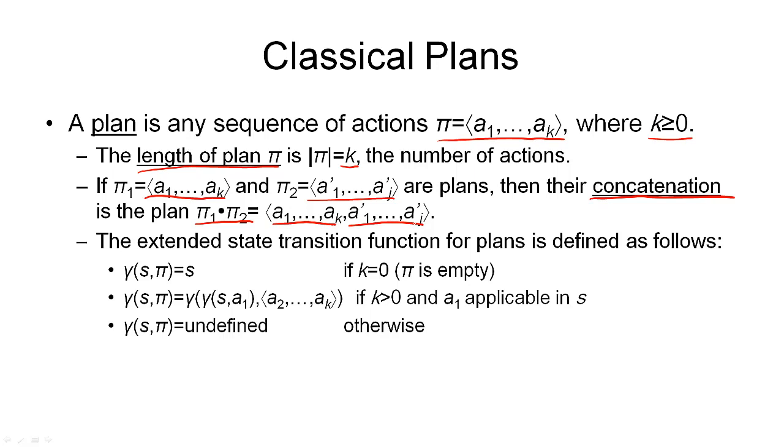We can also extend our state transition function as follows. We can define a state transition function for a state and a plan by defining that it is the state from which we start if our plan was empty. So if there were no actions in the plan, we simply remain in the same state. But if there were actions in the plan, so k was greater than 0, then we first execute the first action. That gives us a new state. And then we apply the state transition function recursively to the remainder of our plan.